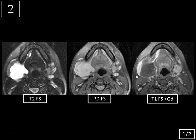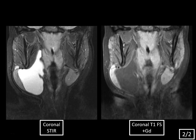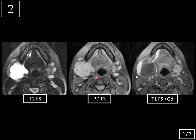All right, case two, slide one of two, MRI of the floor of the mouth. We have axial fat-suppressed T2 proton density and T1 post-gadolinium images of the floor of the mouth. Notice how there's this lobulated T2 hyperintense, T1 hypointense cystic mass posterior to the right aspect of the mandible and anterior to the sternocleidomastoid muscle. So you might initially think, is this a second branchial cleft cyst, given the location? Or could it be a cystic or necrotic lymph node? Well, let's review the floor of the mouth anatomy because it can be a bit confusing.